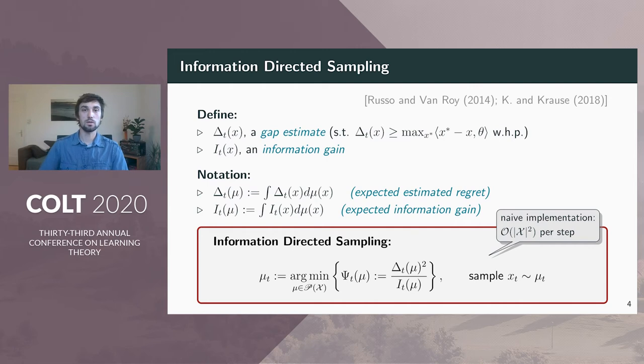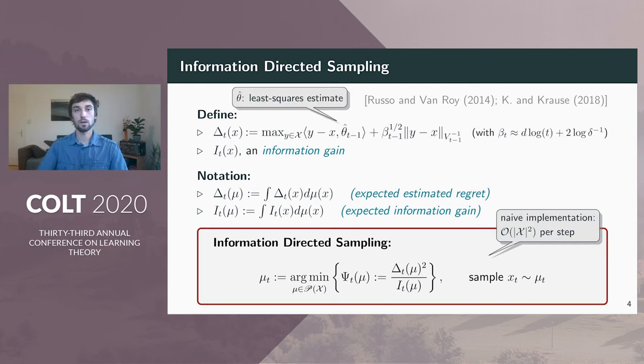Let's get back to the regret estimate and the information gain. For the regret estimate, we use a simple d-squares estimator theta hat, and standard confidence bounds to ensure that the estimate upper bounds the true gaps. Beta_t is a scaling parameter that depends on the confidence level and is typically of order d log t. For the information gain function, several choices are possible. Here we use the increase of the log determinant potential for an observation a_x. This corresponds to mutual information between the observation and the parameter in Bayesian setting.